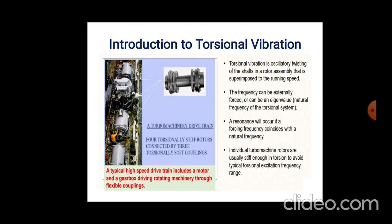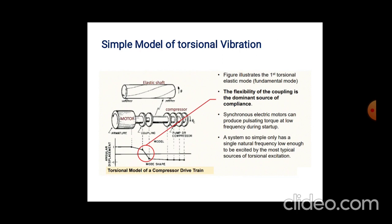The figure shows the thermomachines drive train — four torsionally stiff rotors connected by three torsionally soft couplings. The typical high-speed drive train includes a motor and gear box driving rotating machines through flexible couplings. For the simple model of torsional vibrations, the figure illustrates the first torsional elastic mode. Flexibility of the coupling is the dominant source. The synchronous electric motors can produce pulsating torque at low frequency during start-up. The system has a single natural frequency low enough to be excited by the most typical sources of torsional vibration excitation.